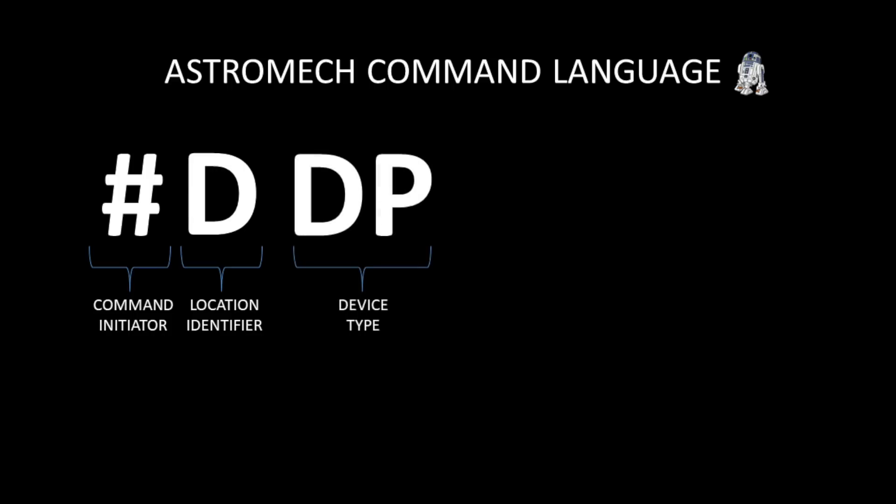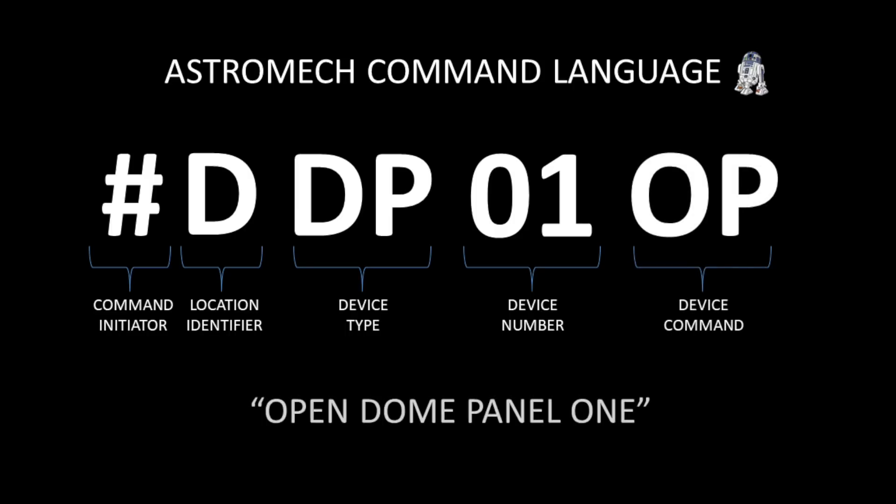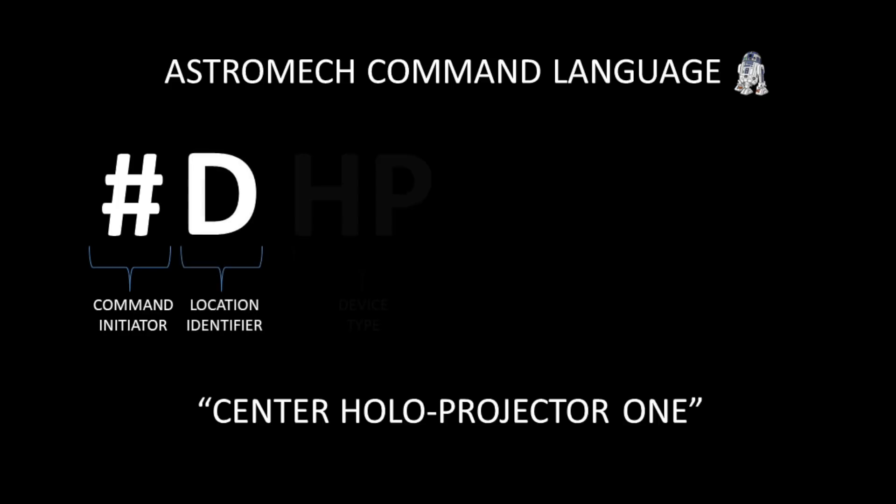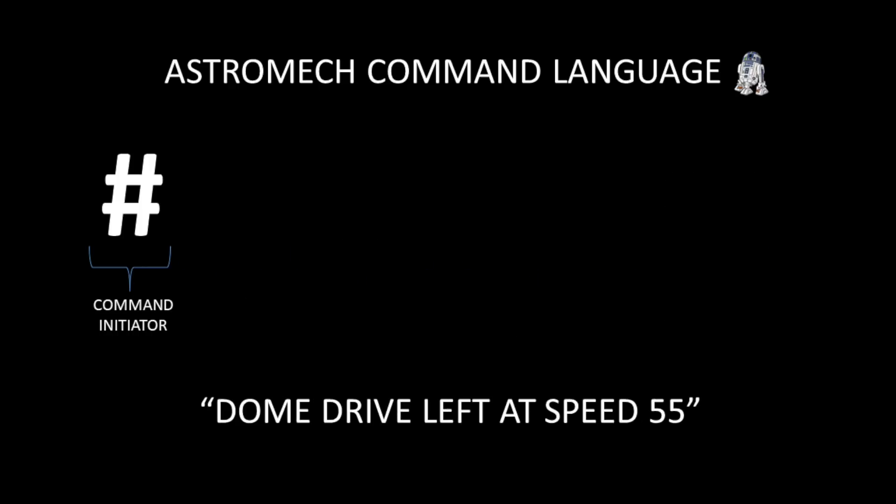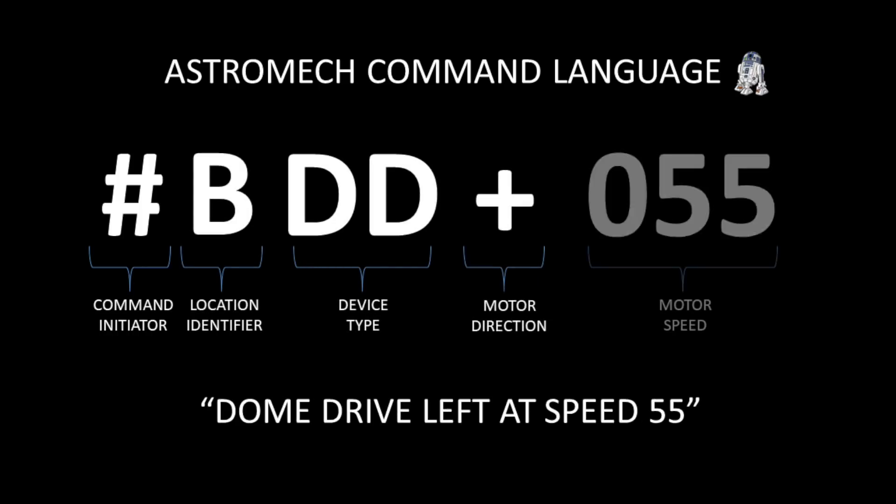Followed behind the command is a string of parameters. For example, pound DDP01OP is the command to open dome panel 1. Pound DHP01CT tells hollow projector 1 to center itself. Pound BDD plus 055 tells the dome drive to turn left at a speed setting of 55.